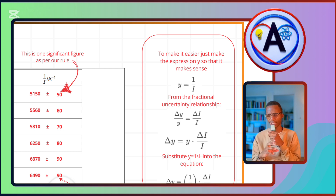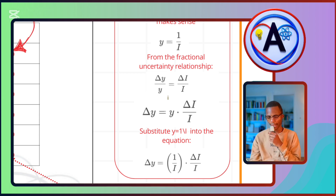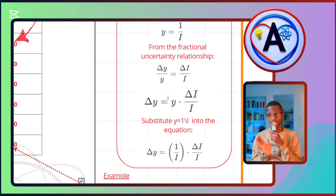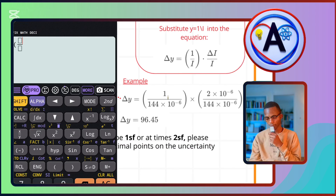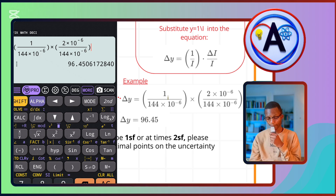Since y = 1/i, this is division, so Δy/y = Δi/i, meaning Δy = y × Δi/i. Since y = 1/i, the absolute uncertainty in 1/i is: Δ(1/i) = (1/i) × Δi/i. You're already given current with its absolute uncertainty, so substituting: (1 / 144×10⁻⁶) × (2×10⁻⁶ / 144×10⁻⁶) gives Δy ≈ 96.45.